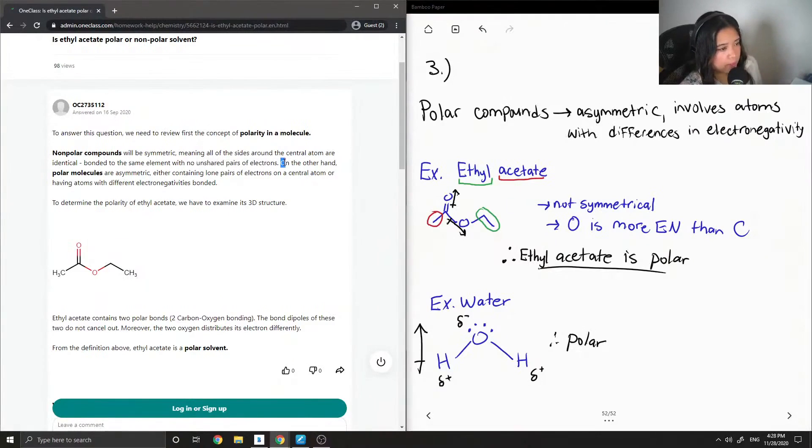They continue on to say, on the other hand, polar molecules are asymmetric, either containing lone pairs of electrons, an essential atom like the water molecule here, or having atoms with different electronegativities bonded, like ethyl acetate there.